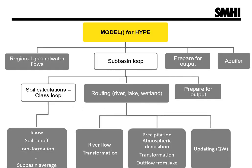The model sub-routine calculates all hydrological processes for one time step. In principle, it calculates one sub-basin at a time. The calculation order of sub-basins is determined by the water flow order given in input data. Thus, the main part of calculations within the model sub-routine is done in a sub-basin loop — but there are exceptions.